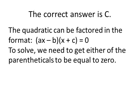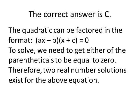A quadratic can be factored in the format: (ax - b)(x + c) = 0. To solve, we need to get either of the parentheticals to be equal to zero. Therefore, two real number solutions exist for the above equation, since we would have one value for the parenthetical on the left and another value for the parenthetical on the right.